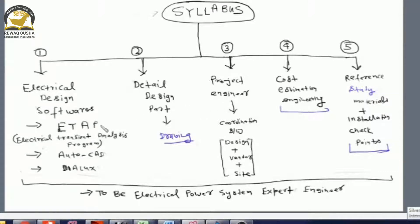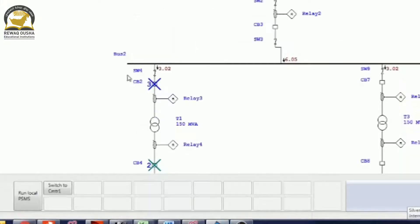ETAP is used for simulation purposes, AutoCAD is used for drawing preparations, and DIALUX is used for illumination designing. So let us quickly see how ETAP will work.